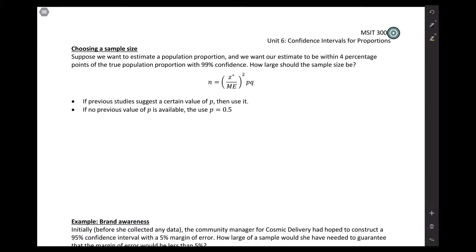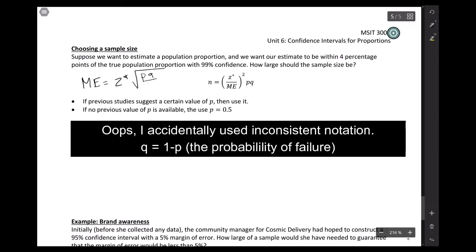So first of all, let's start off by just thinking about what the formula for the margin of error is. The margin of error is whatever our critical value is, Z star, times this formula for the standard error, P times Q divided by N.